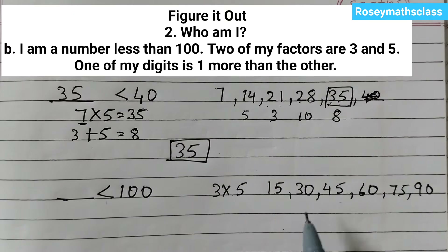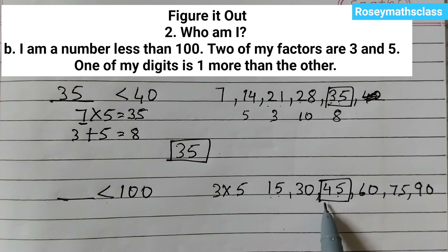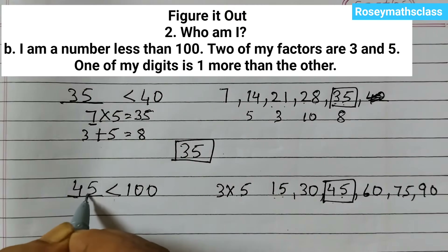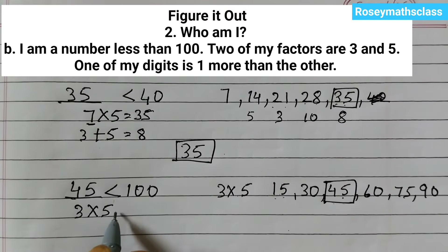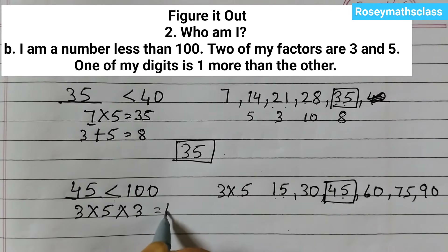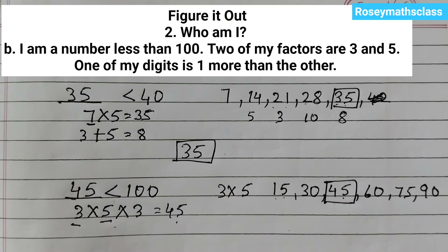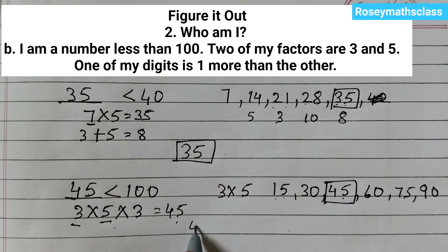One digit is one more than the other. Looking at 45, 5 is one more than 4. So the answer is 45. It is less than 100, its factors include 3 and 5 (since 3×5×3=45), and one digit is one more than the other (5 is one more than 4). So 45 is the answer.